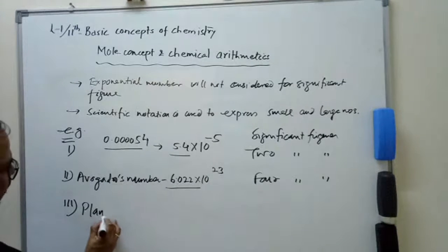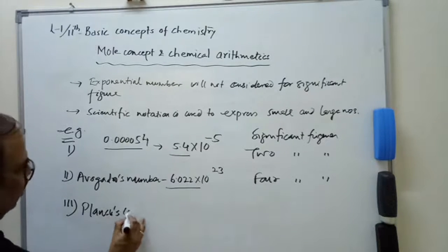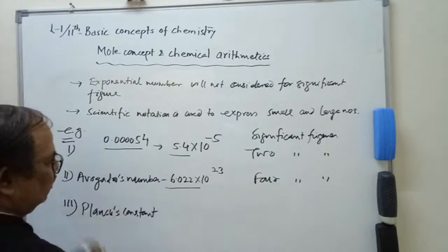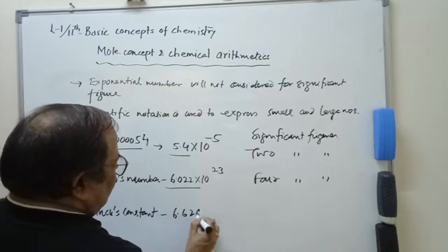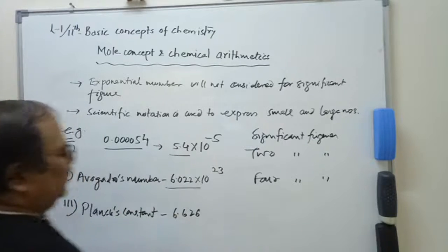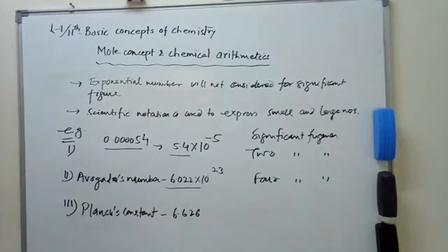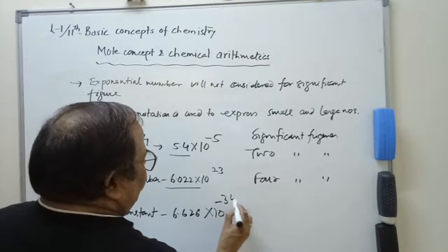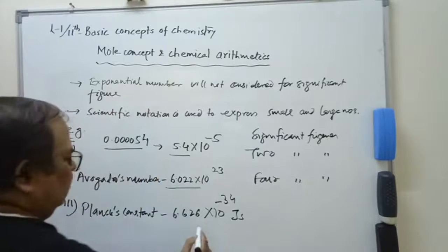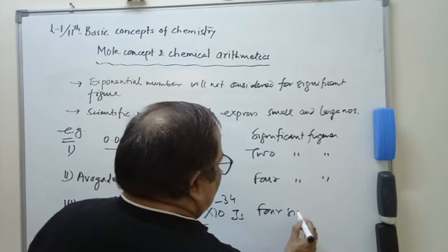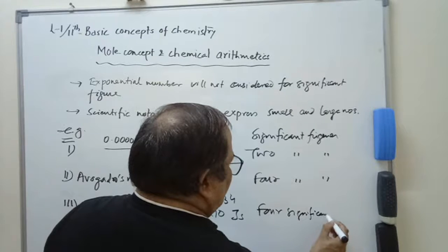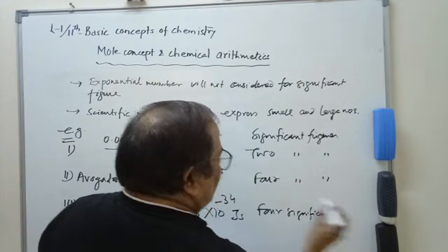Third example: consider Planck's constant, 6.626 into 10 to the power minus 34 joule second. How many significant figures? Four significant figures.